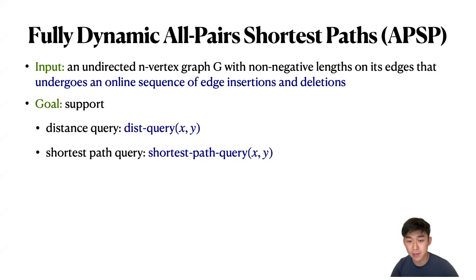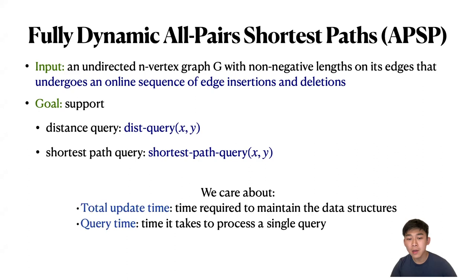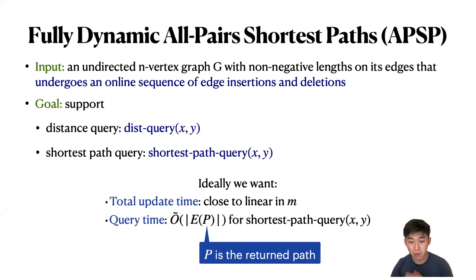The problem we're considering is the fully dynamic all-pairs shortest path problem, APSP. For inputs, we're given an undirected weighted graph G with non-negative lengths on its edges that undergoes an online sequence of edge insertions and deletions. Our goal is to support distance queries: given a pair of vertices x and y, return the distance between them, and also shortest path queries, where we return the shortest path connecting x to y. For simplicity, let's assume all edge lengths are bounded above by poly-n. We care about total update time, which is the time required to maintain the data structure throughout the whole algorithm, and query time, which is the time to process a single query. Ideally, we would like total update time closer to linear in n, and query time for shortest path queries proportional to the number of edges of the path returned.